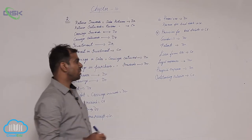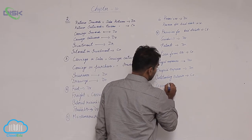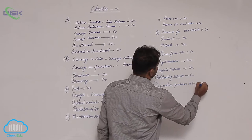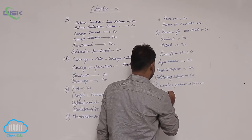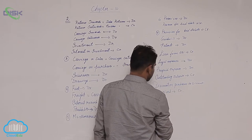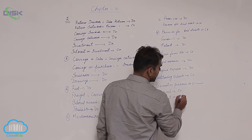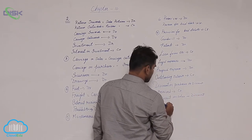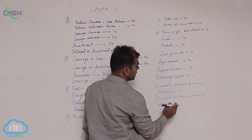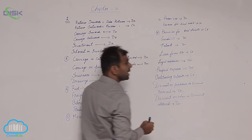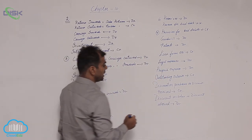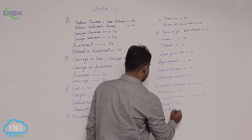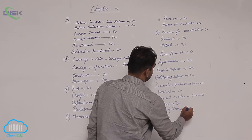Next, you have discount on purchases, which is nothing but discount received. Since it is a gain, it shows credit balance. Then you have discount on sales, which is nothing but discount allowed. Being a loss, it shows debit balance. The next item is provision for depreciation — all provisions show credit balance, so provision for depreciation shows credit balance.